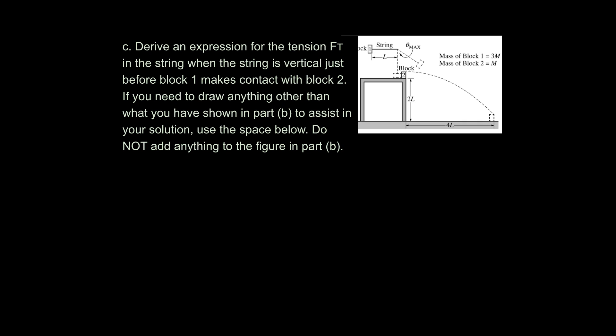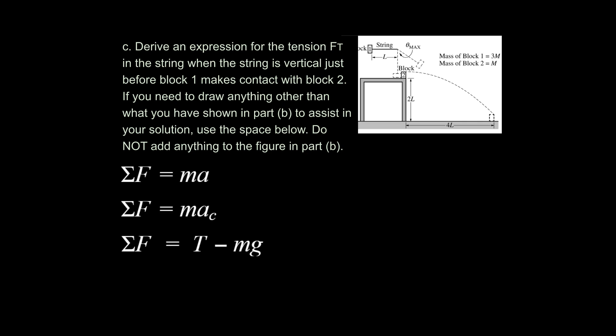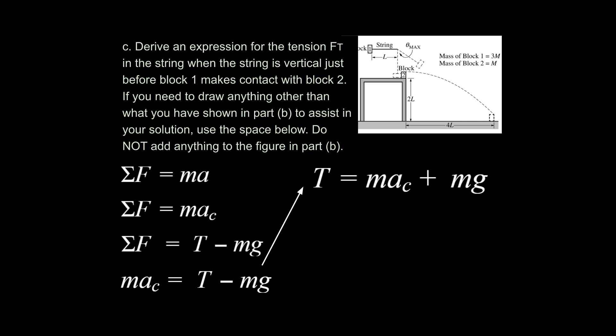To solve for the tension force, use the sum of the forces strategy. Write Newton's second law: ΣF = ma. Here we have centripetal acceleration, so we modify accordingly. Calling up positive and down negative, we get tension minus F_g on the left side. We set those equal to each other and isolate for T.